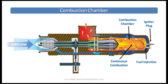The combustion chamber is basically a continuous burning inferno. Compressed air is mixed with vaporized fuel and ignited, and once it's burning it's a continuous burn. The igniter plug at the back is only used for starting the turbine. Once it's up and running it's not used, unless there's something called a flame-out, where there's an interruption of the fuel or the air, and then the igniter plug is used to reignite the turbine.